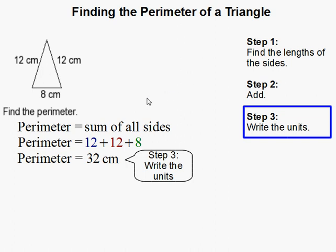So make sure whenever you have a perimeter problem that you don't write the square for the units. And that completes our problem.